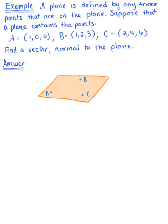Well, we can start by defining two vectors that are parallel to the plane using these given points. We'll start with point A as our initial point. Let's define one vector as AB. Here is vector AB that lies on the plane, and then here is our second vector from A to C that also lies on the plane.